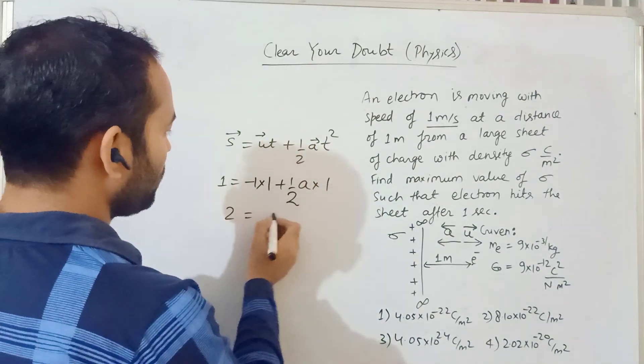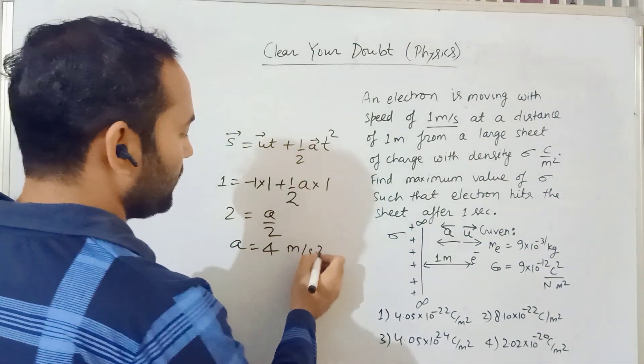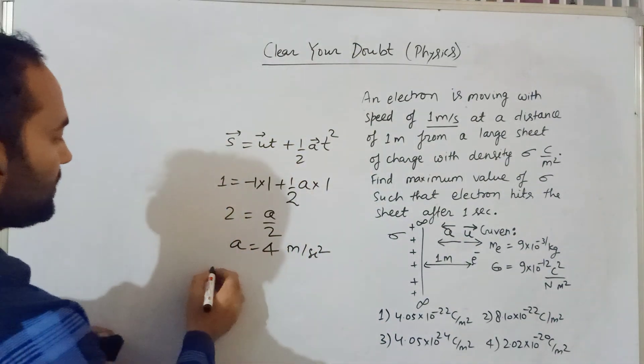So we get 2 = a/2, therefore acceleration is 4 meters per second squared. Now calculate this acceleration.